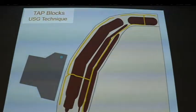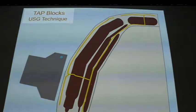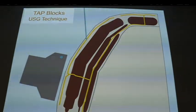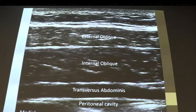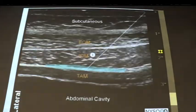For the TAP block technique, you put your probe fairly laterally — even a bit posterolateral if you can. On the ultrasound image, starting at the top: subcutaneous tissue, external oblique, internal oblique, transverse abdominis. In a good subject these are nice chunky muscles that are easy to see. Below that is the peritoneal cavity and bowel. The idea is to come in and get your local anaesthetic just in the plane between the internal oblique and the transverse abdominis. When done correctly you'll see the local anaesthetic spreading in that plane.